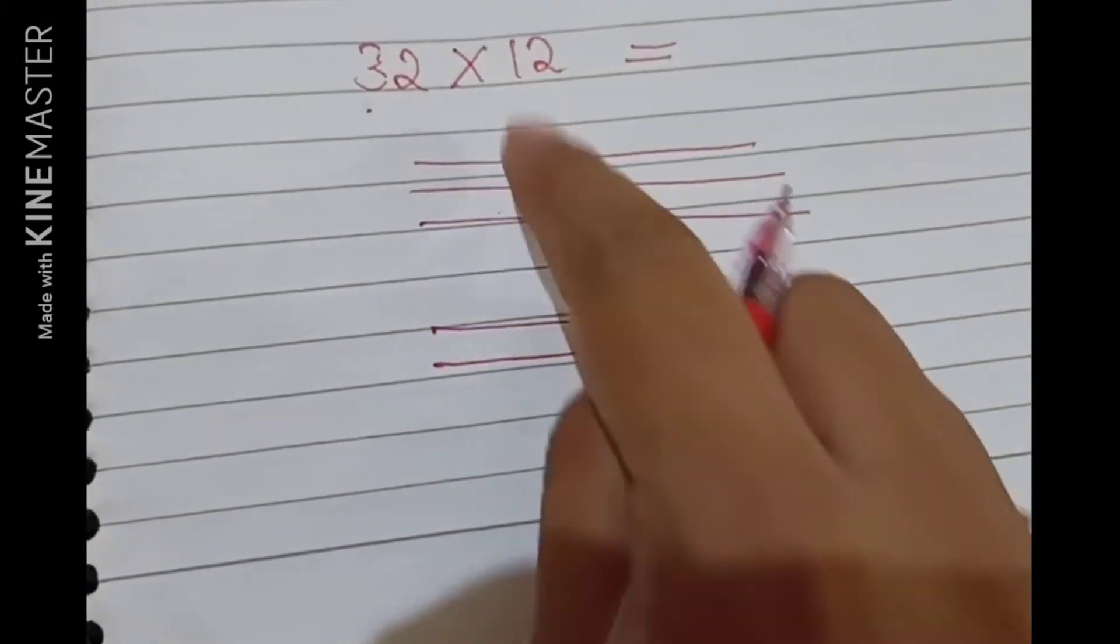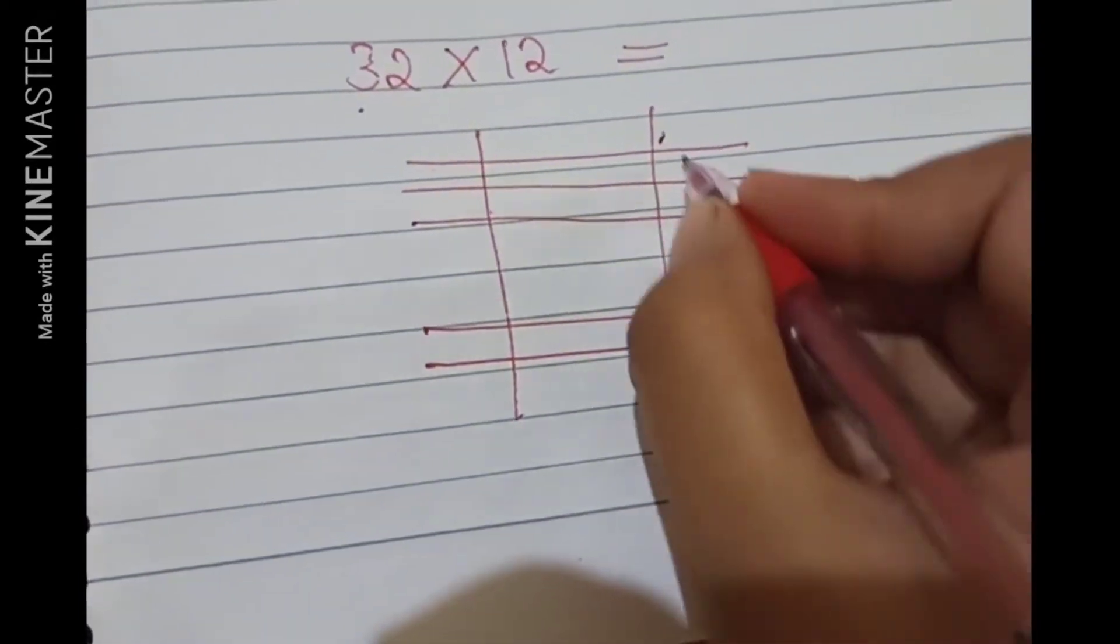Now, if we draw a gap, we will draw two lines. If there is one, then we will draw one line. That's two lines, then we will draw two lines.